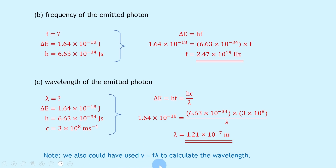Note that we also could have used v = fλ to calculate the wavelength, since we knew the frequency from part b and v is the speed of light c. That's all for this video folks, thanks for watching. Make sure to give the video a thumbs up, subscribe to the channel, and I'll see you in the next one. Take care.